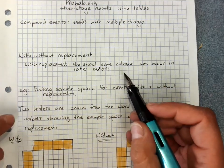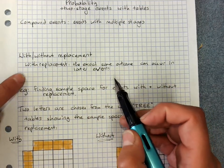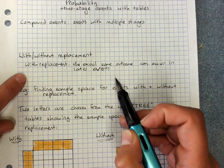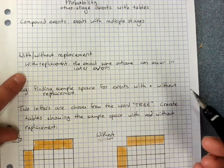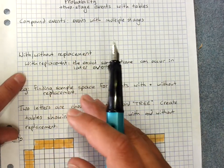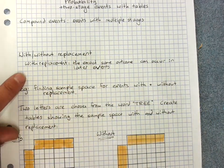But in some situations, you can't have replacement. If you're choosing two people from a group to do two separate jobs, and they can't both do the same job, then once you've chosen the first person, they're out of the running.